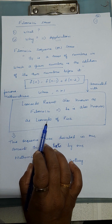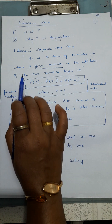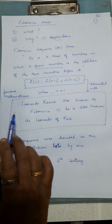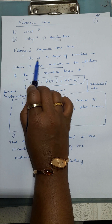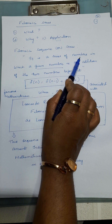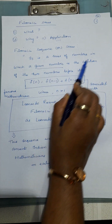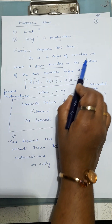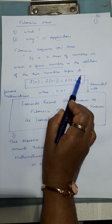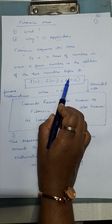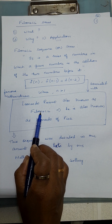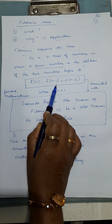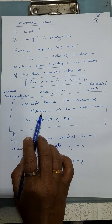Now let us see the actual definition of Fibonacci series. It is a series of numbers — a series of continuous numbers in which a given number, the current number, is obtained by the addition of the two numbers before it. So the third number will be the sum of the previous two numbers. Mathematically it is defined as F(n) = F(n-1) + F(n-2).